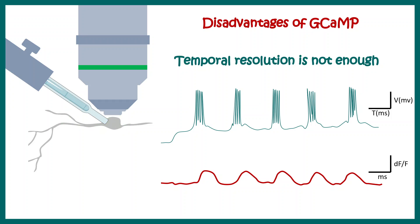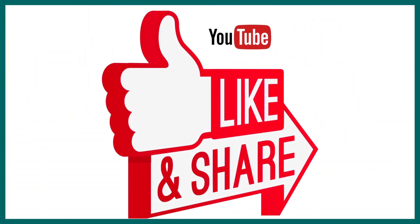To circumvent these problems, scientists are now improving GCaMP — developing GCaMP-F, which can capture fast dynamics. There are also many different types of GCaMPs, and scientists have generated RCaMP variants in the red fluorescent protein range. Overall, GCaMP is a very useful tool for neuroscientists.